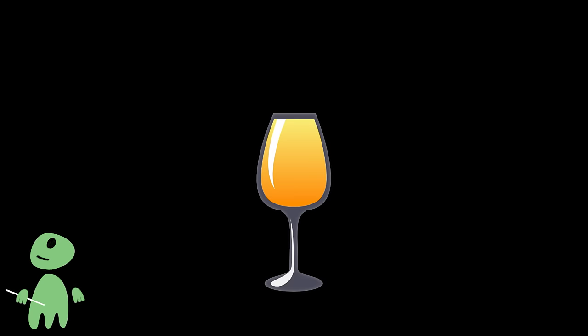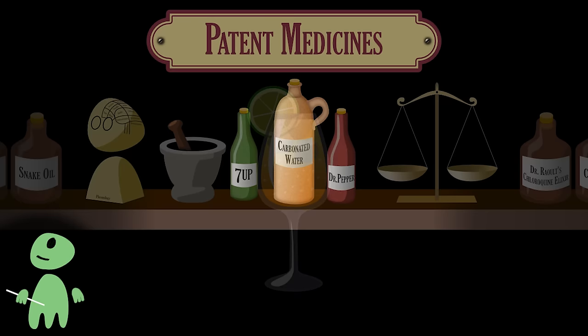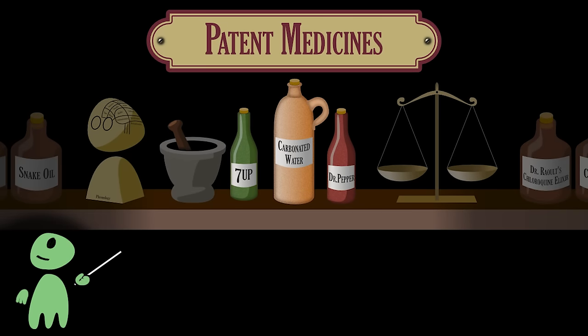That's why Earthlings love sugary drinks. Bonus points when they are also cold, bubbly, and have a sour or fruity taste. That's basically what Earthlings call soda, another popular drink. By the way, some modern soda brands like 7up and Dr. Pepper were originally sold as quack remedies, the former as an antidepressant, the latter to help digestion, and as a stimulant.